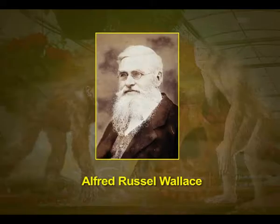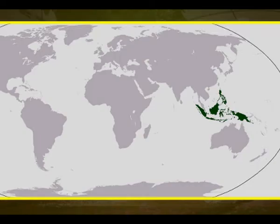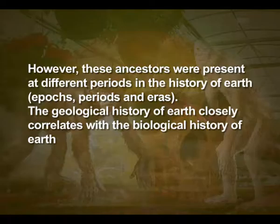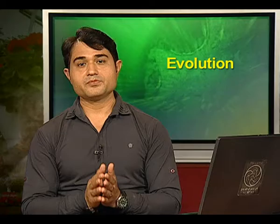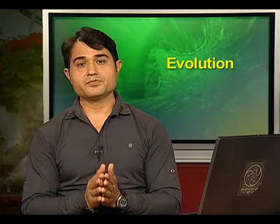Let us also remember that Alfred Wallace, a naturalist who worked in the Malay Archipelago, had also come to similar conclusions around the same time. In due course of time, apparently new types of organisms are recognizable. All existing life forms share similarities and share common ancestors; however, these ancestors were present at different periods in the history of earth — in different epochs, periods and eras.